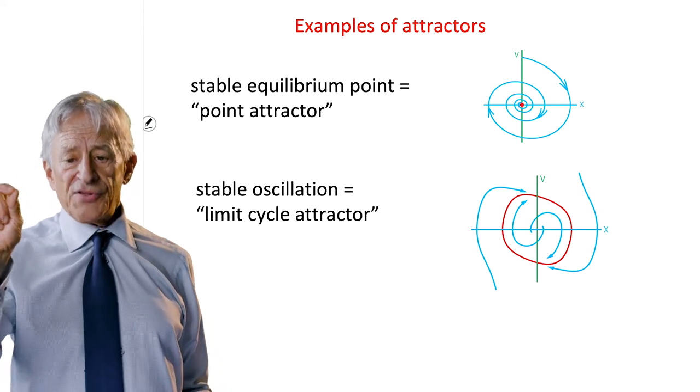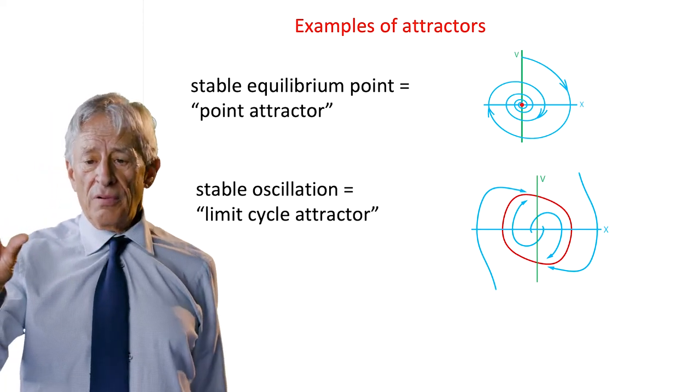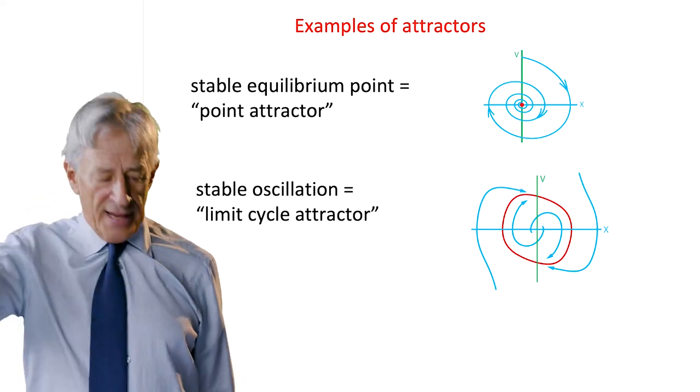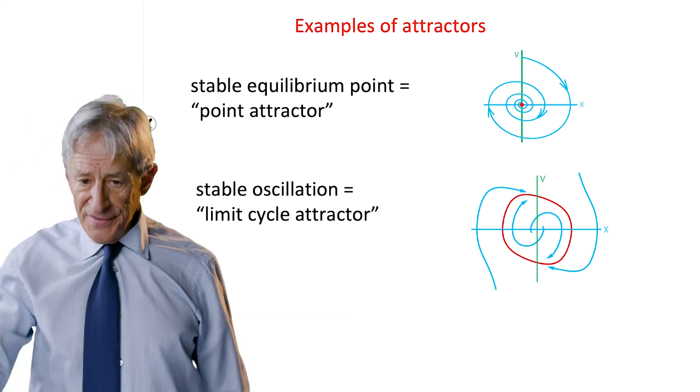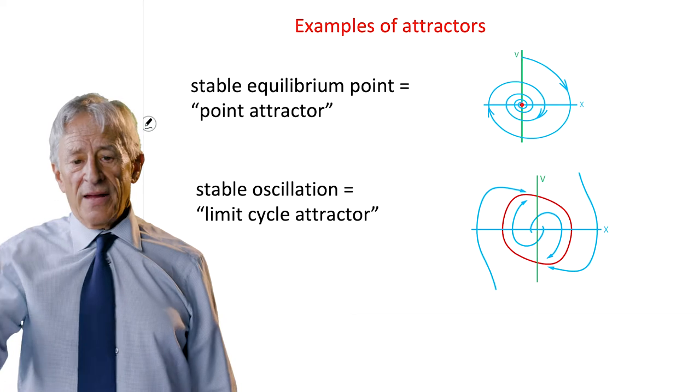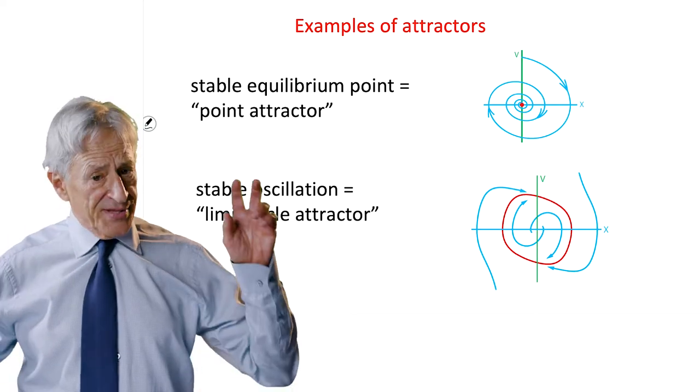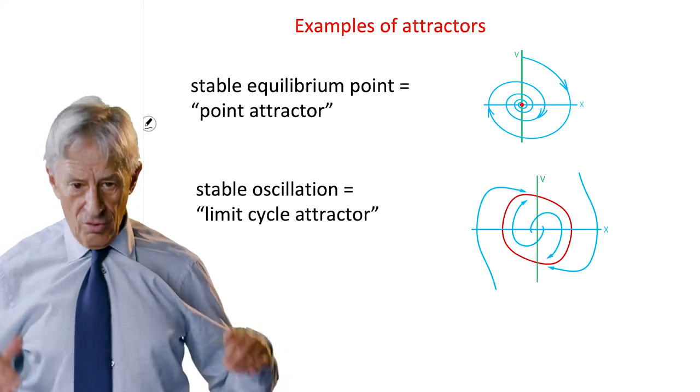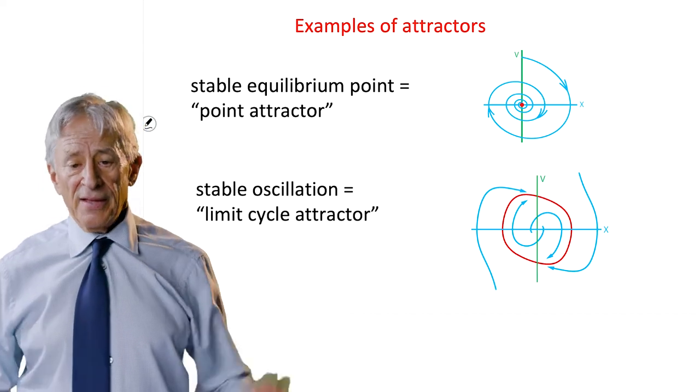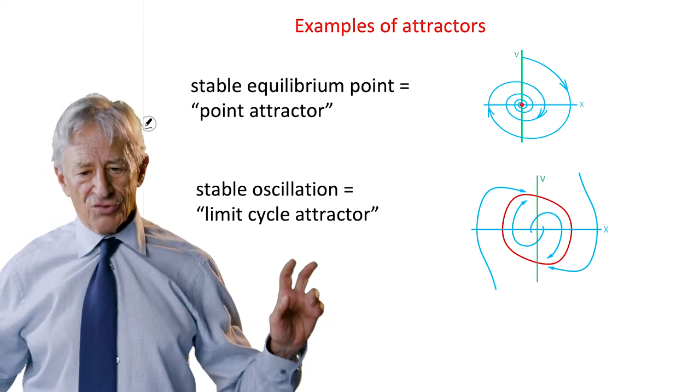Near points off the loop get drawn to the loop as time approaches infinity. And that becomes a stable oscillation, also known as a limit cycle attractor.